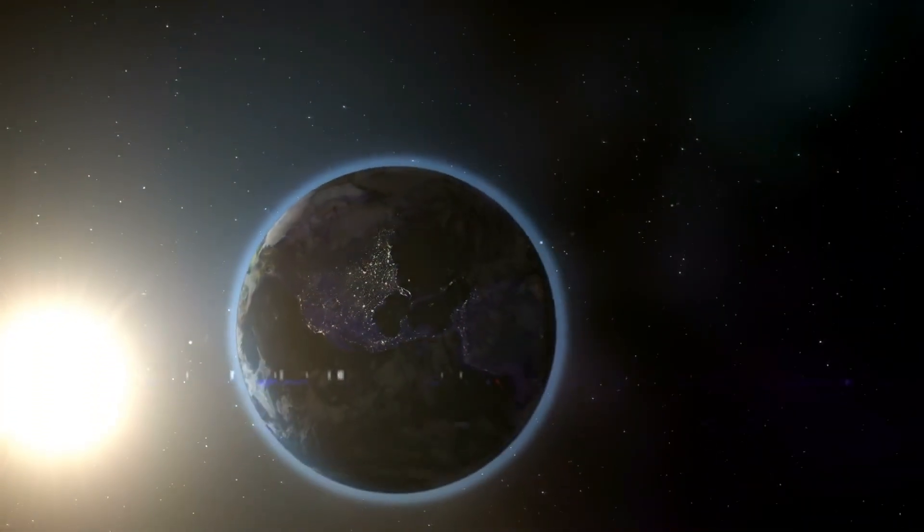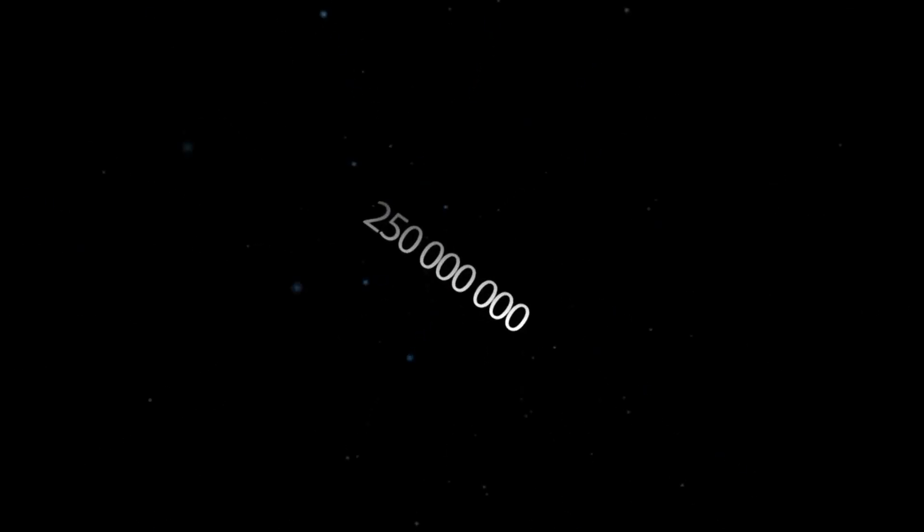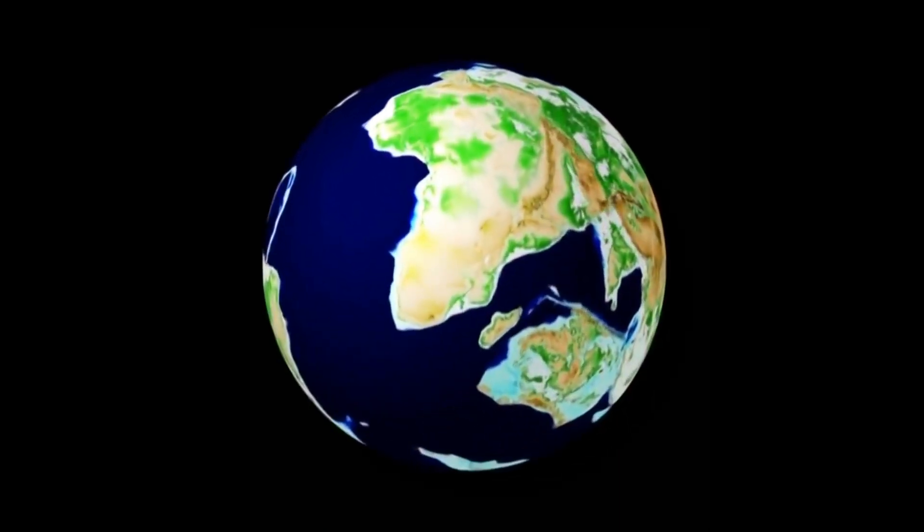In 60 million years, the Earth's orbit will become unpredictable. In 250 million years, the continents will start moving and creating a new supercontinent.